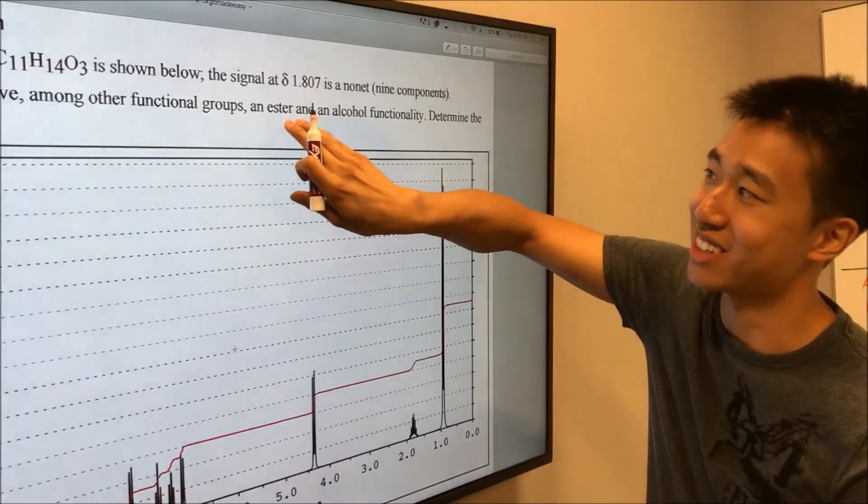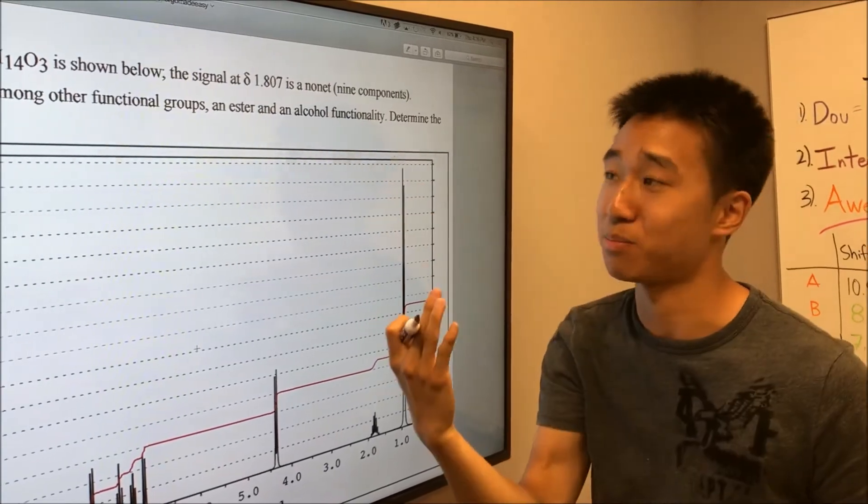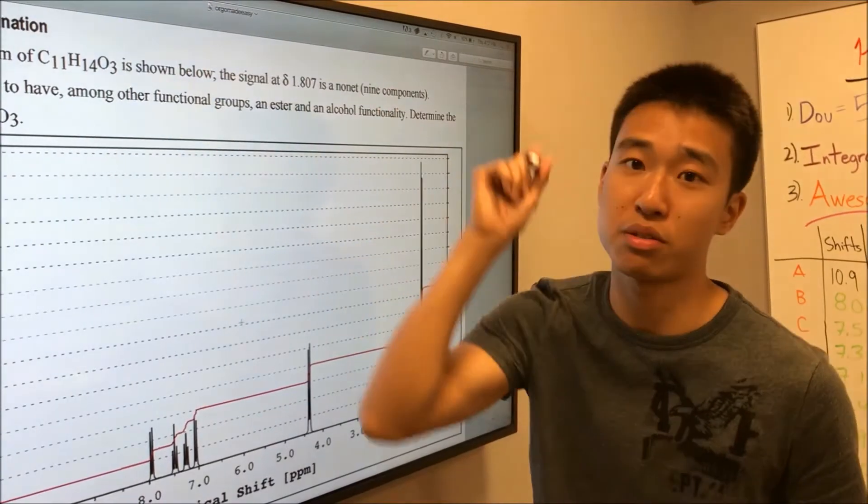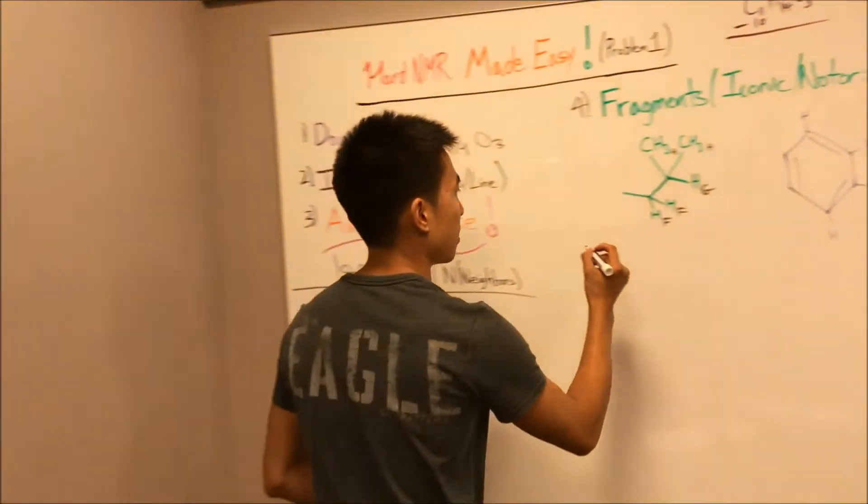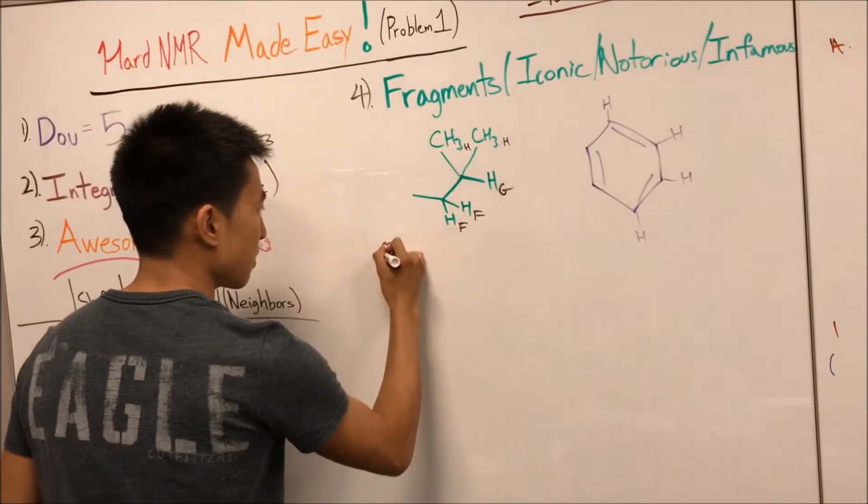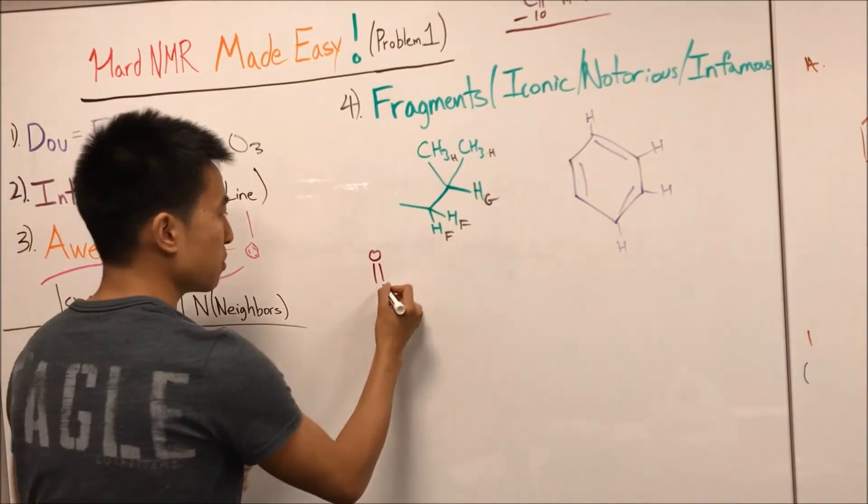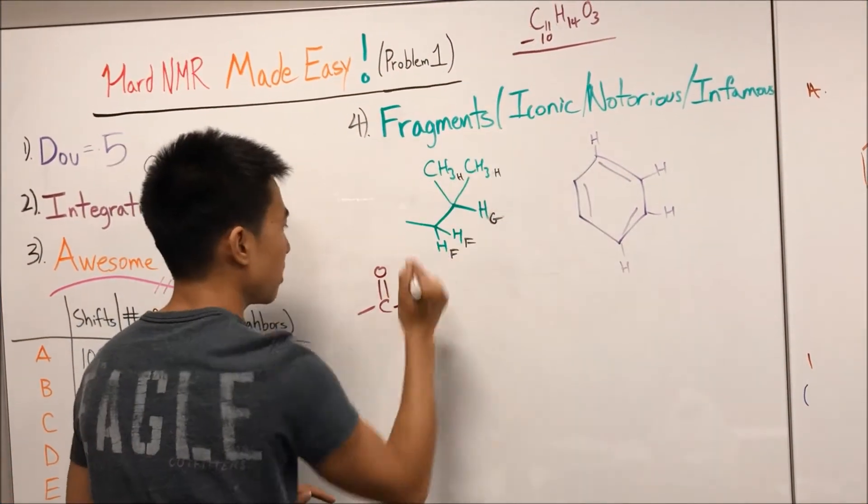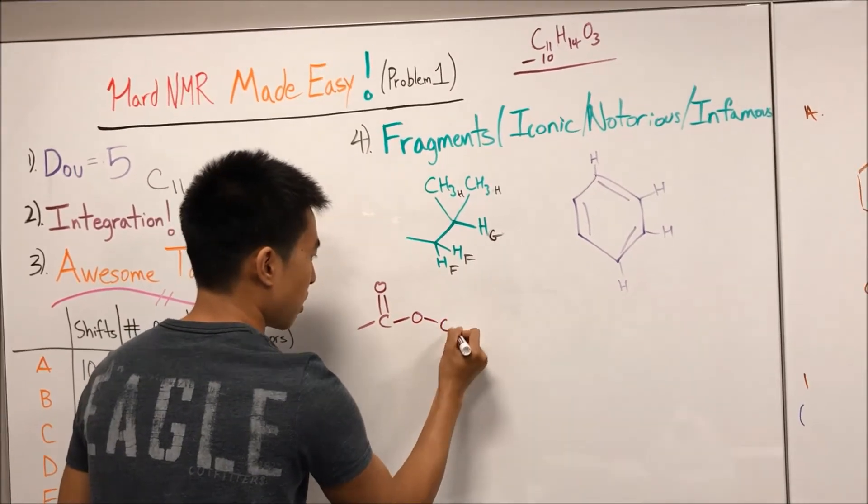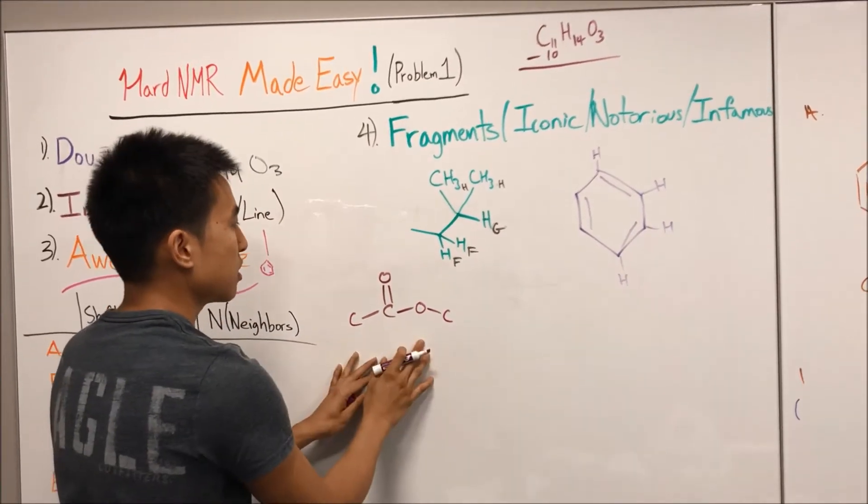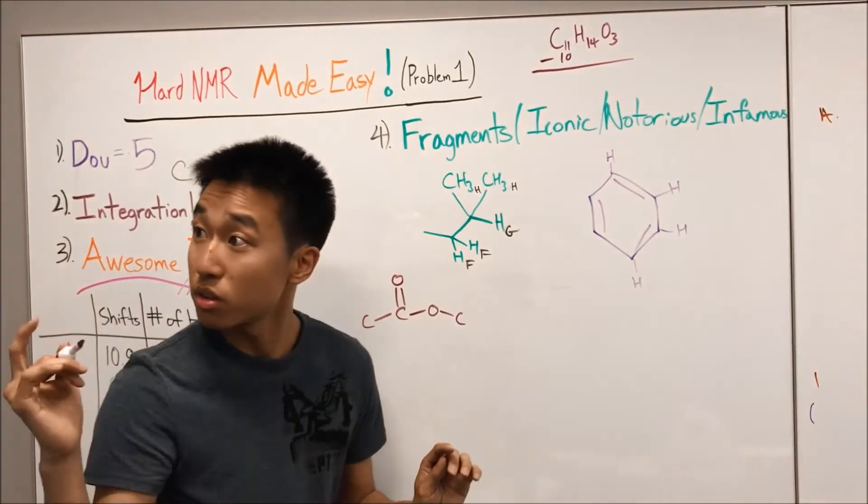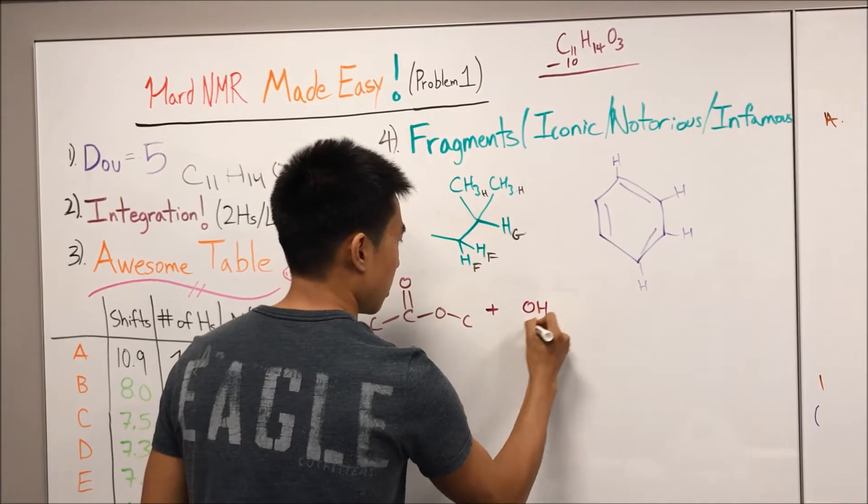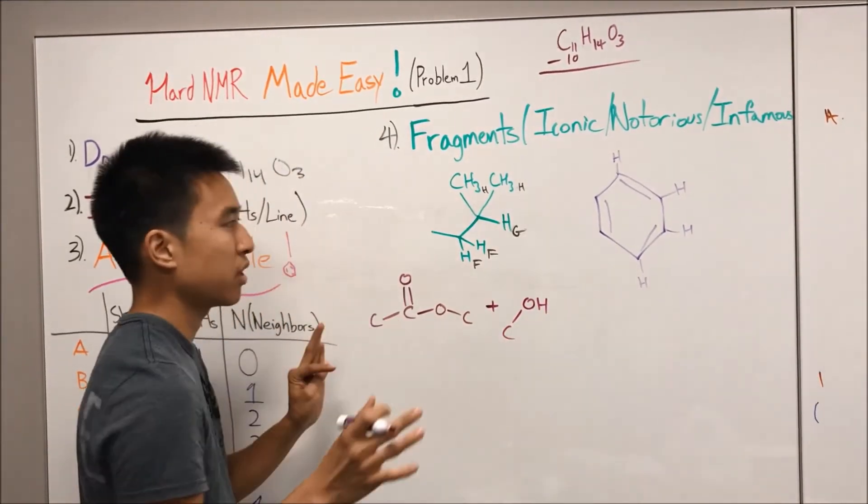Alright, so we know that we've accounted for a whole bunch of carbons already. There's six in the benzene ring. Let's see, seven, eight, nine, ten. We didn't read the question properly, and this happened when we were practicing too, but it actually told us that there's an ester and alcohol. And that's awesome, because an ester has two oxygens, and alcohol has one oxygen, and that fulfills all three oxygens. So that fragment is actually an ester.